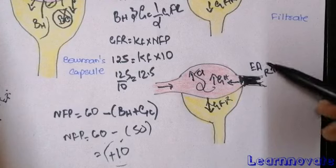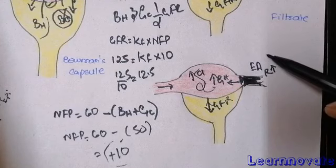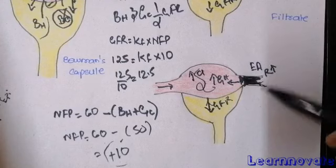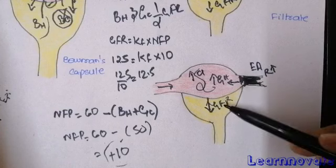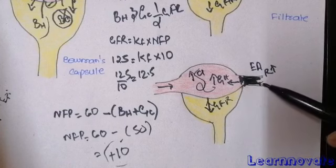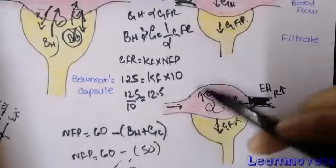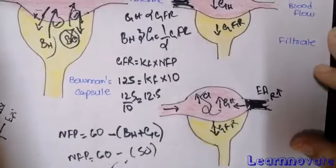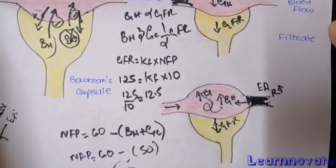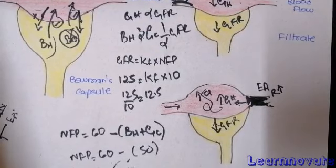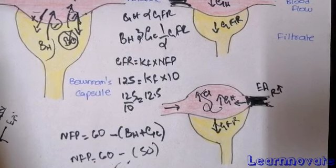To summarize, efferent arteriole resistance and constriction have two effects. If there is mild constriction, there will be an increase in glomerular filtration rate. If there is severe constriction, there will be a decrease in glomerular filtration rate. In both cases, blood flow remains decreased because there is constriction. Next, we will discuss the effects of autoregulation.